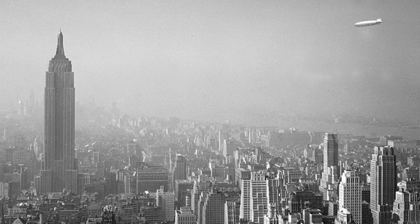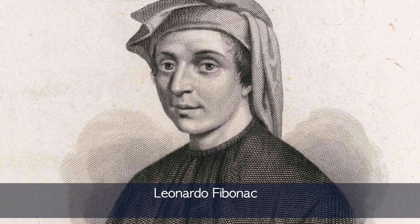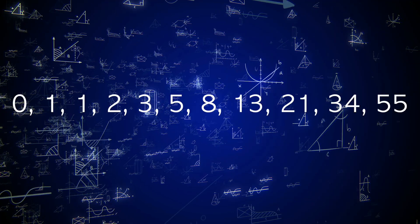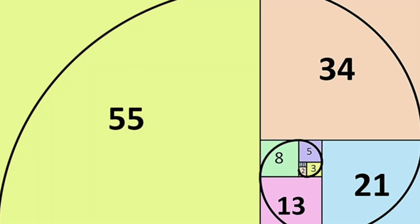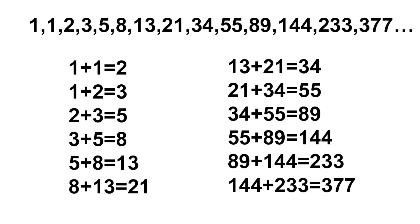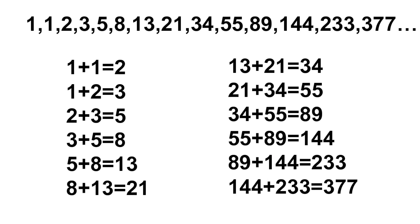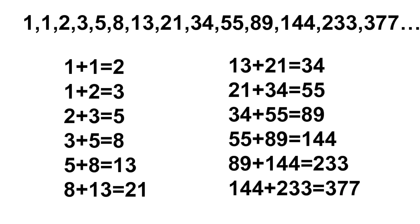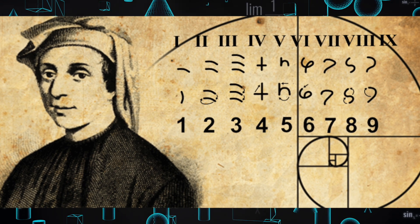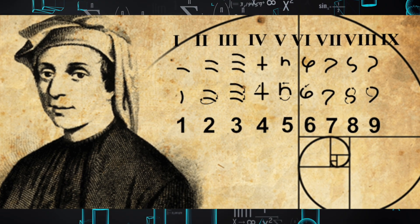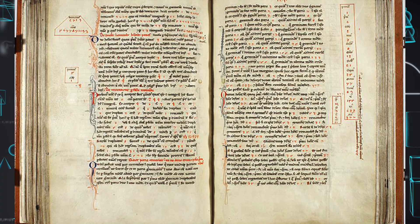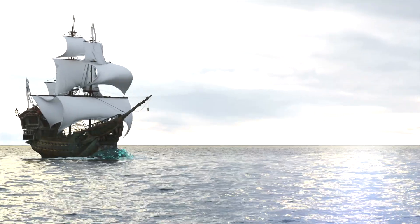In the 1200s, Leonardo Fibonacci created the Fibonacci sequence, which is the golden ratio laid out into a series of numbers where each number is the sum of the two preceding numbers. Leonardo Fibonacci was only teaching what he learned after his travels to the Middle East and North Africa while he traveled as a merchant.